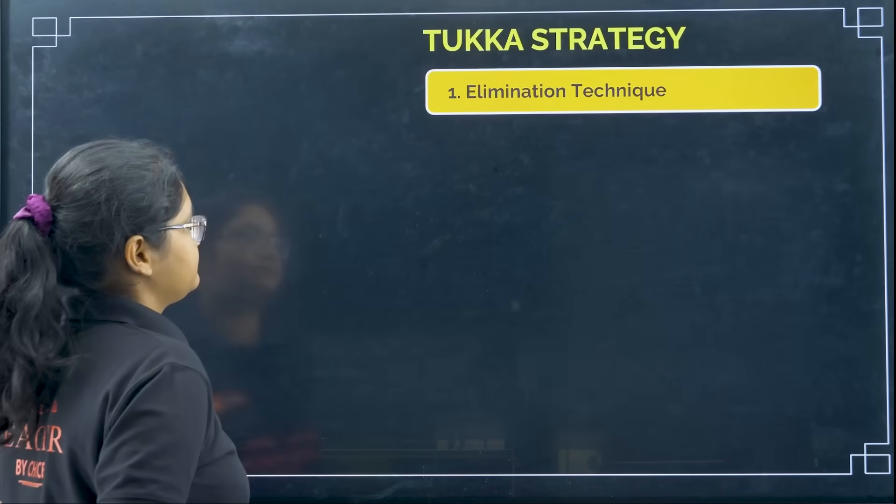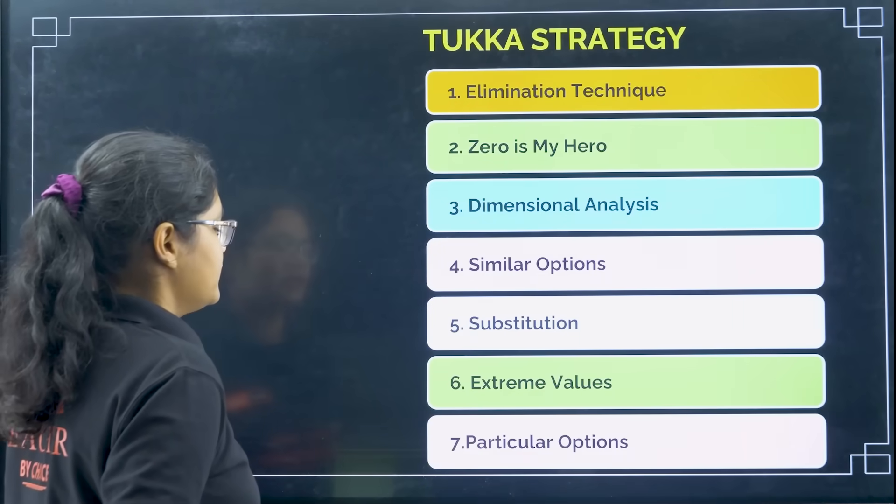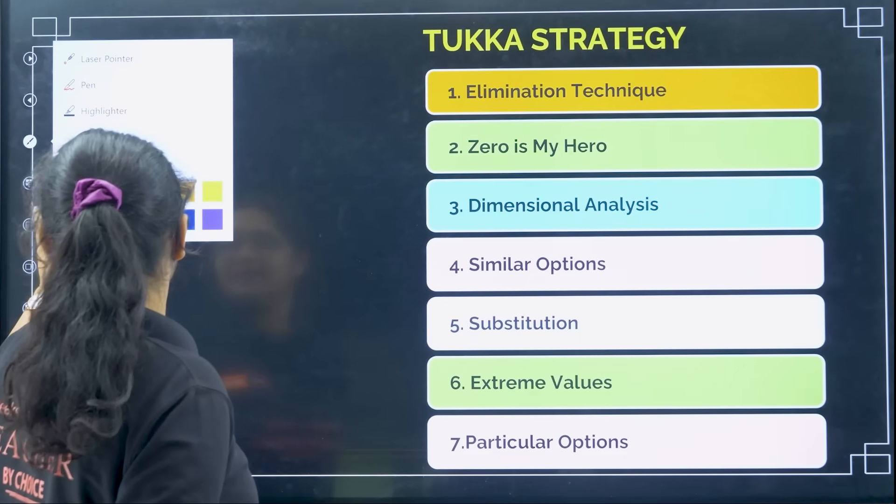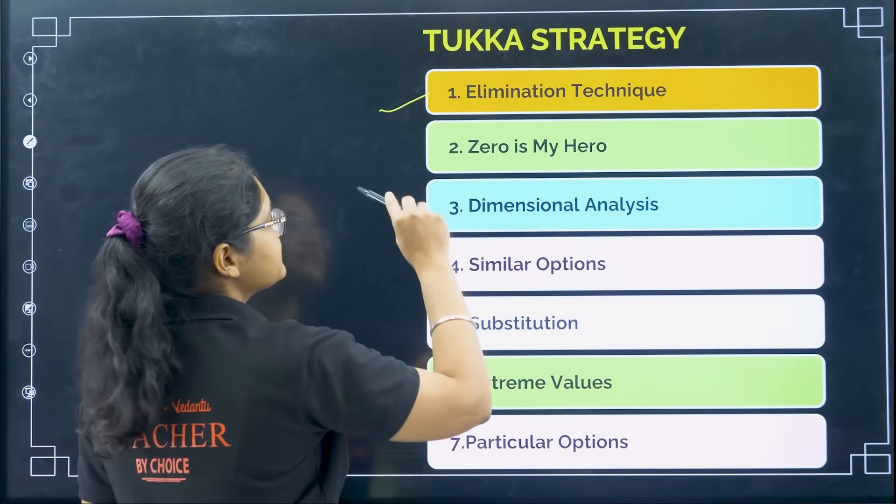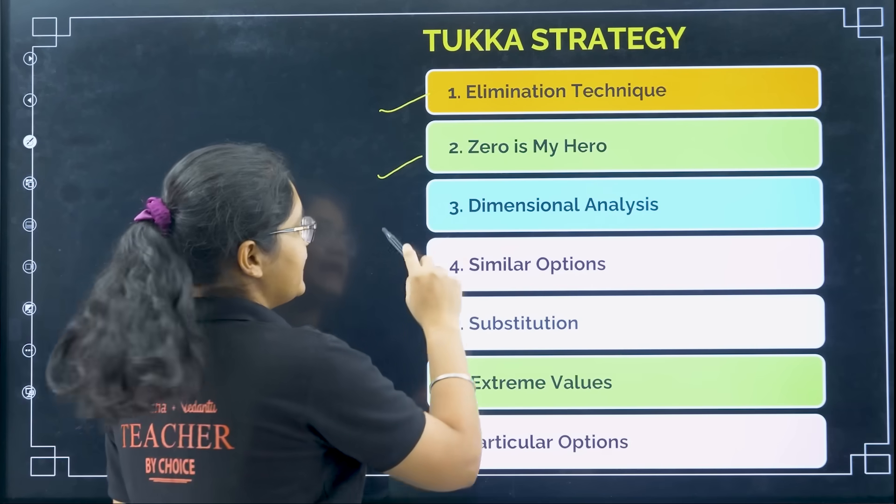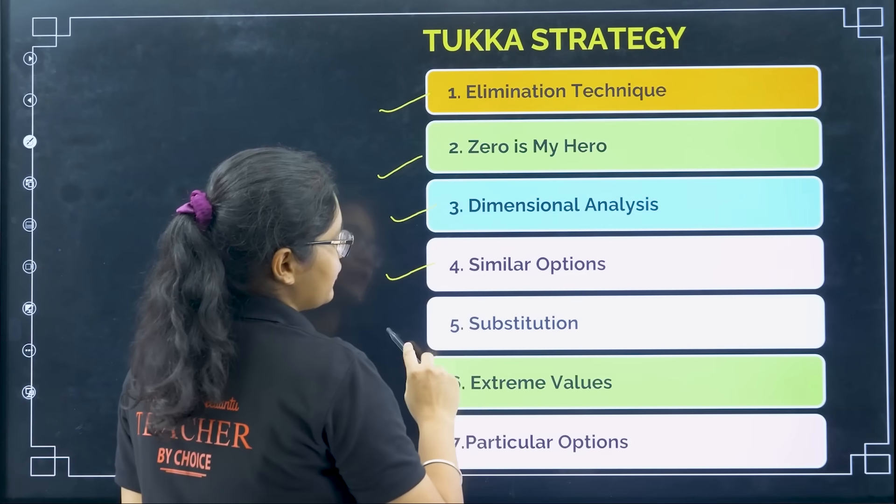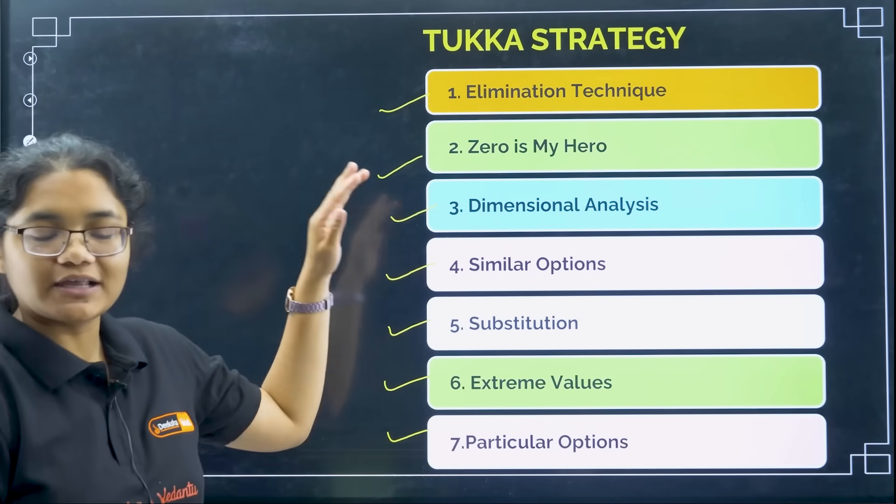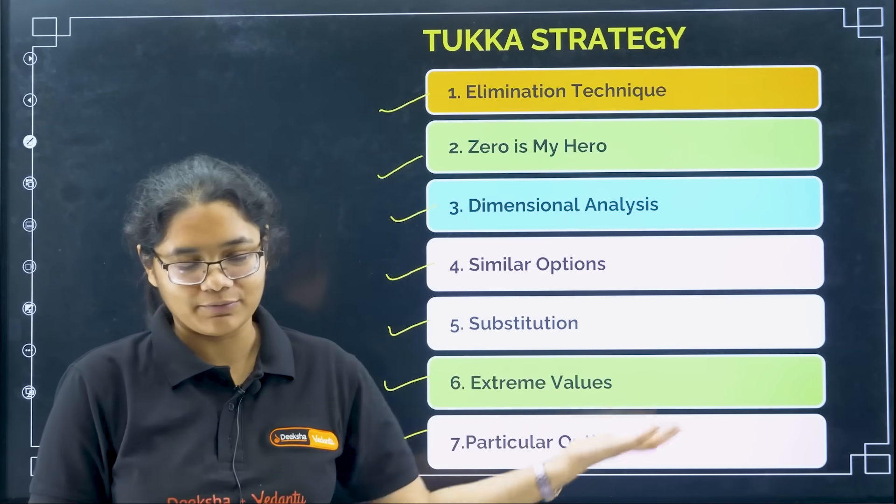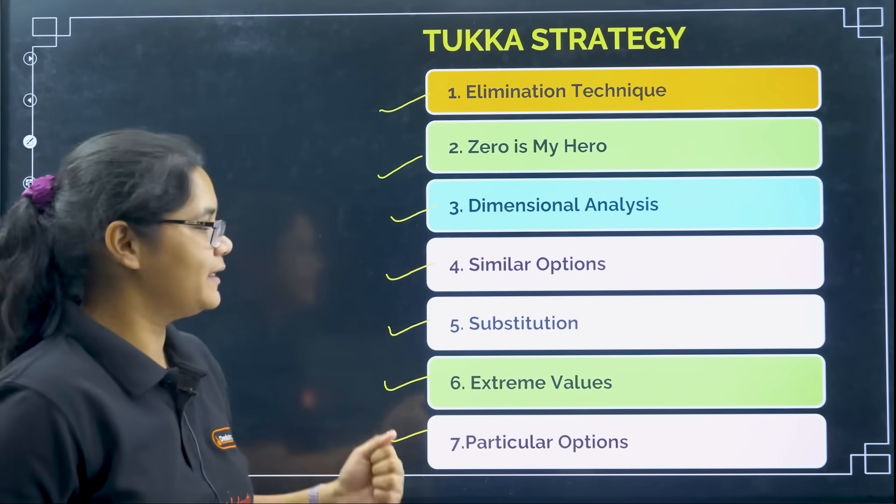So let us go with the first one. We have seven tricks that we should remember: elimination technique, zero technique, dimensional analysis, similar option, substitution, extreme values and particular options. So I will be talking about all this and I have named them according to my convenience, I will explain them.